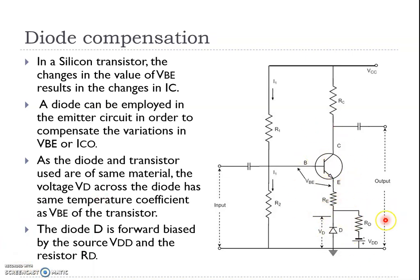We are placing a diode such that, since the diode and transistor are made of the same material, the voltage drop across the diode has the same temperature coefficient as VBE of the transistor — this is the base-emitter junction. The diode is forward biased by the source VDD and the resistor RD.